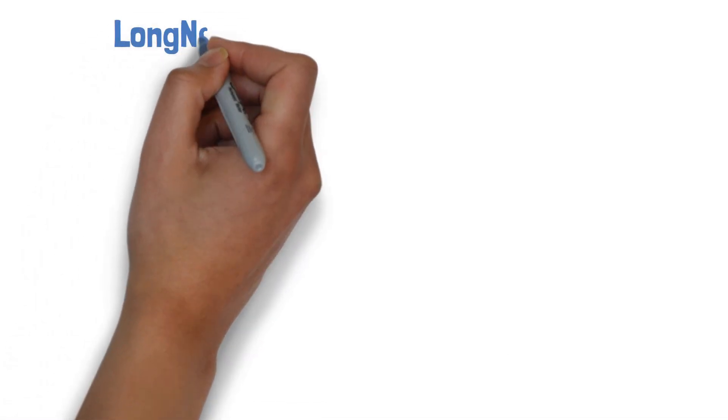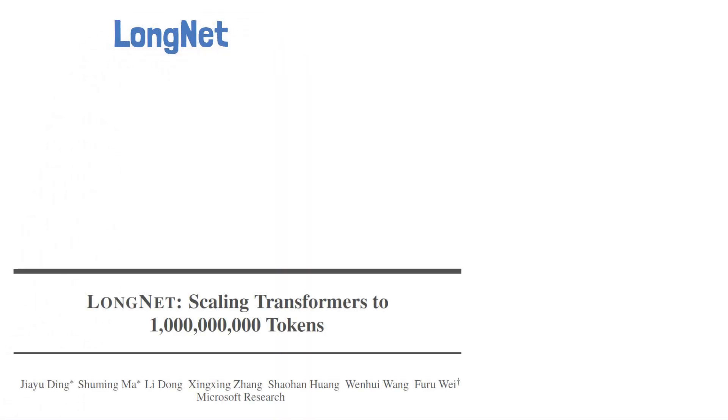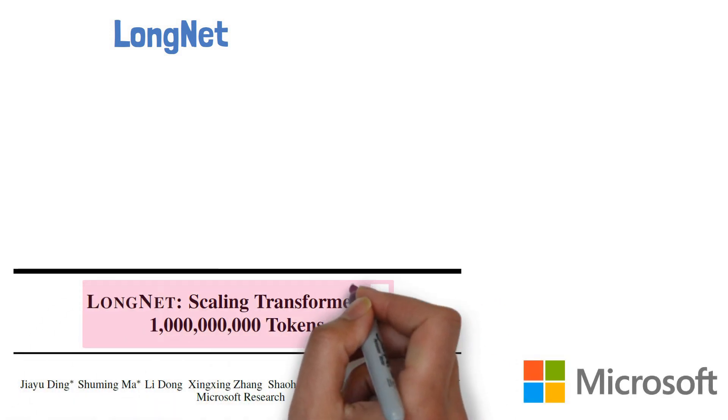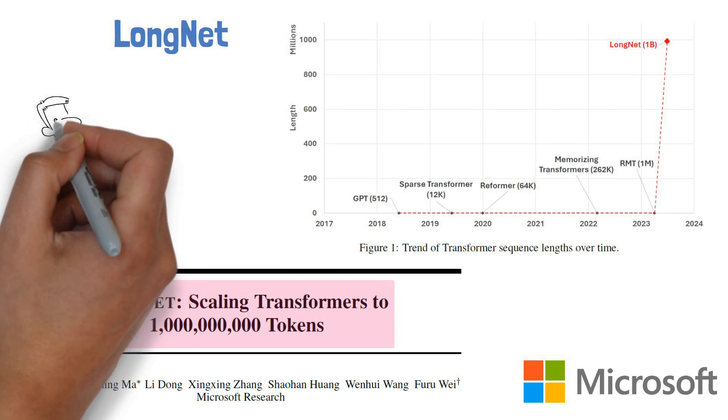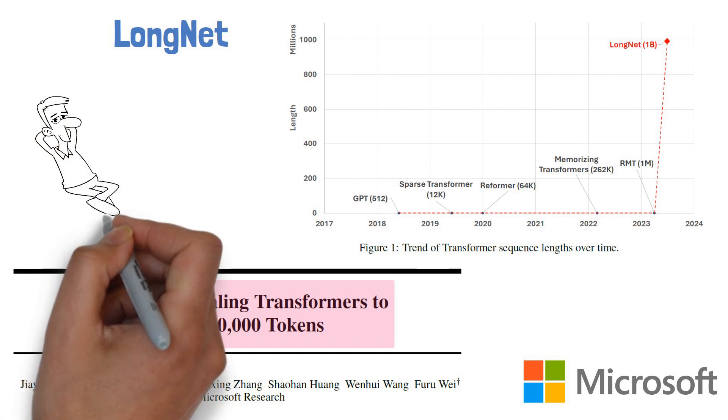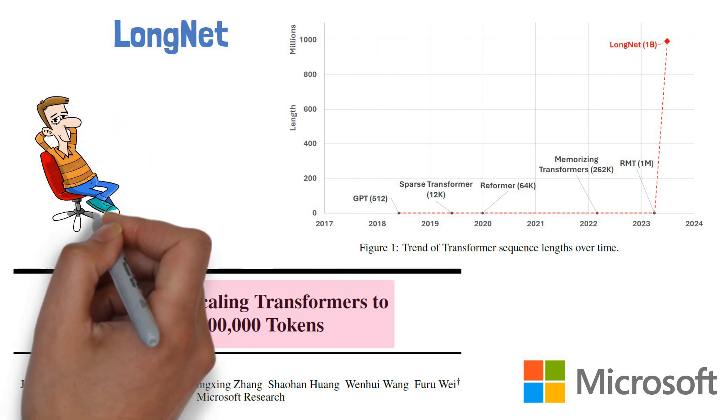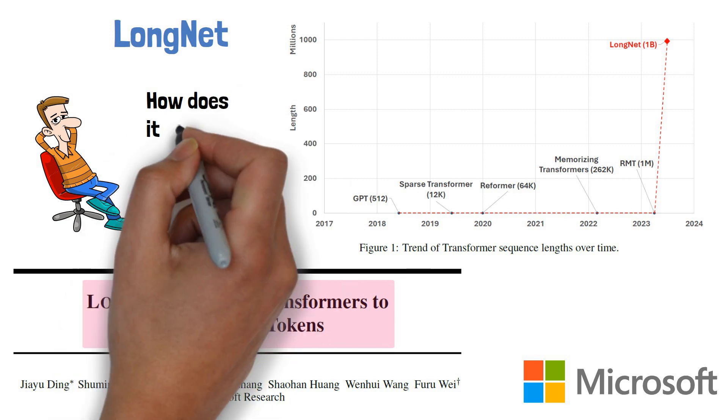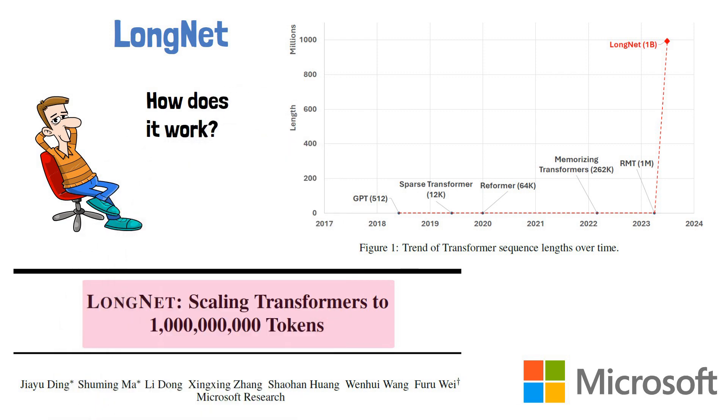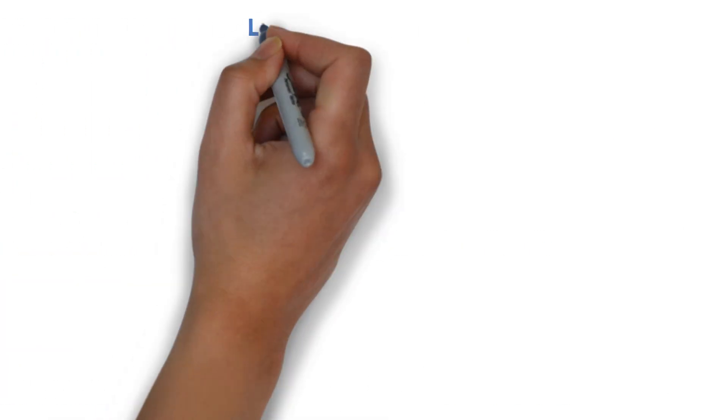Thank you for joining this video about LongNet, a new research paper from Microsoft titled LongNet: Scaling Transformers to 1 Billion Tokens. The paper starts with this amusing chart showing the trend of transformer sequence lengths over time in a non-logarithmic y-axis, and we can see LongNet is way above with its 1 billion tokens. But how does it work? In this video we'll cover important points from the paper to help you keep track on this new advancement.